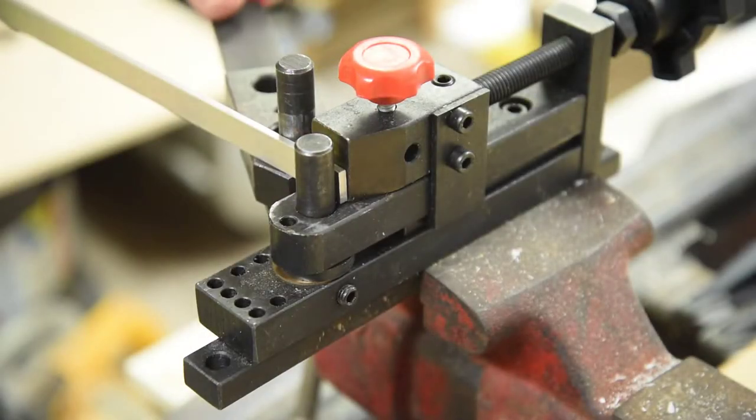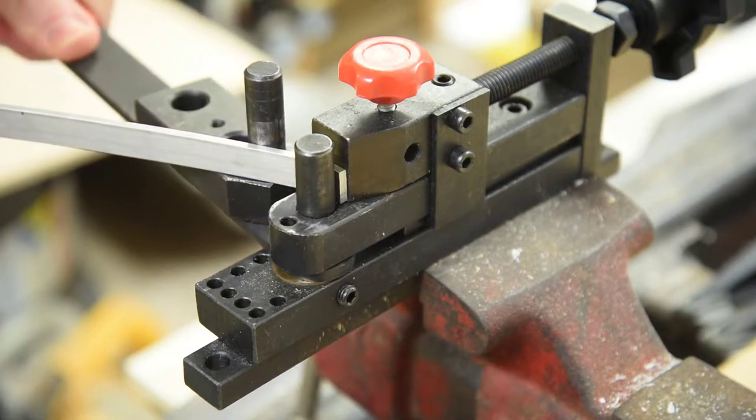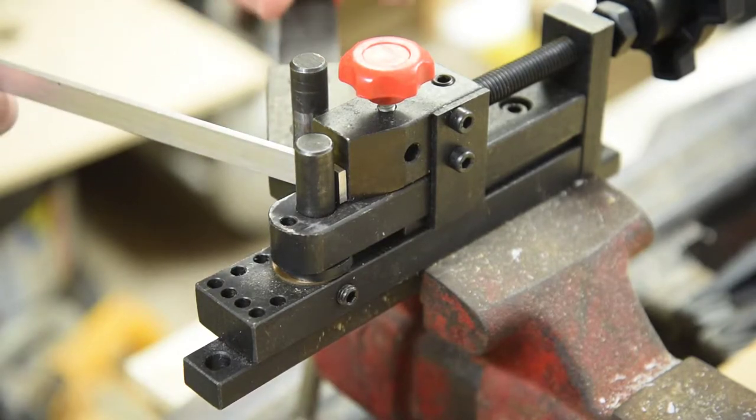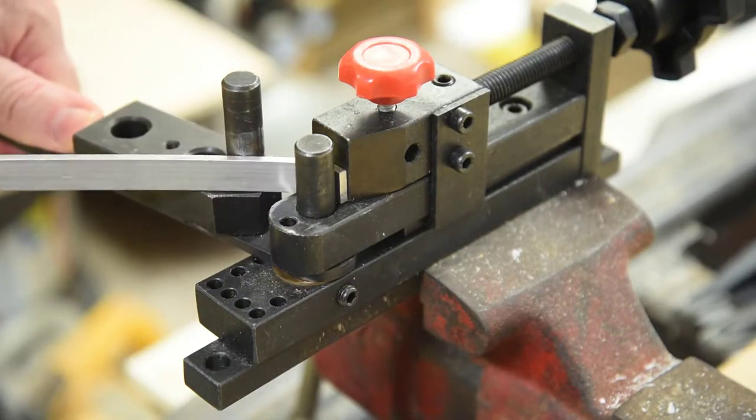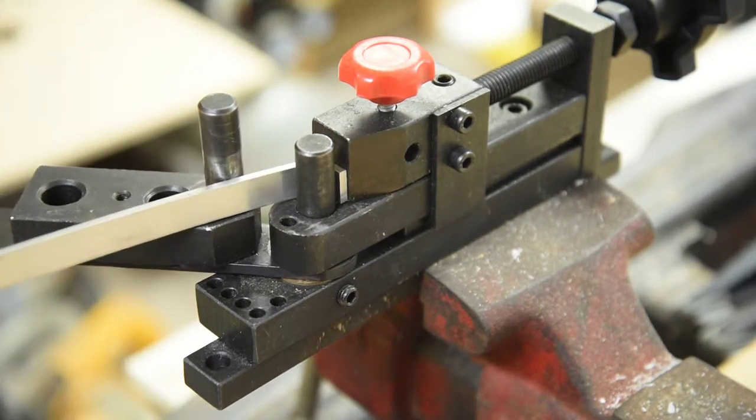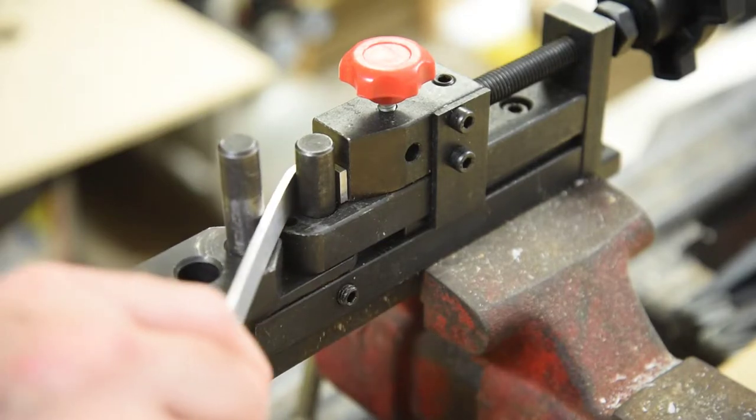For the first test I'm going to try some 1/8 inch thick aluminum bar. Trying to get a bend on the end of the bar doesn't work very well. For this stiff of material, need the end of the bar to be well past the center line of the center pin.